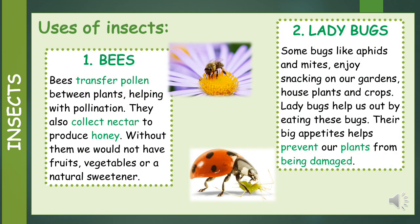The first insect we will be looking at are bees. Bees transfer pollen between plants, helping with pollination. They also collect nectar to produce honey. Without them, we would not have fruits, vegetables or natural sweetener. Our second insects are ladybugs.